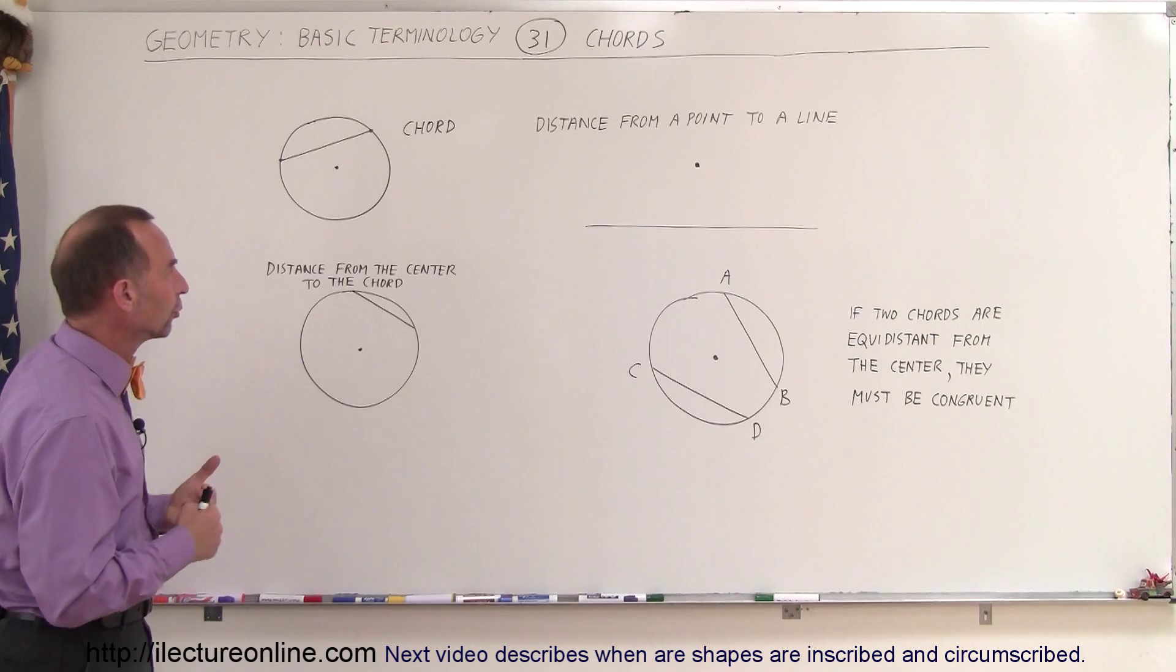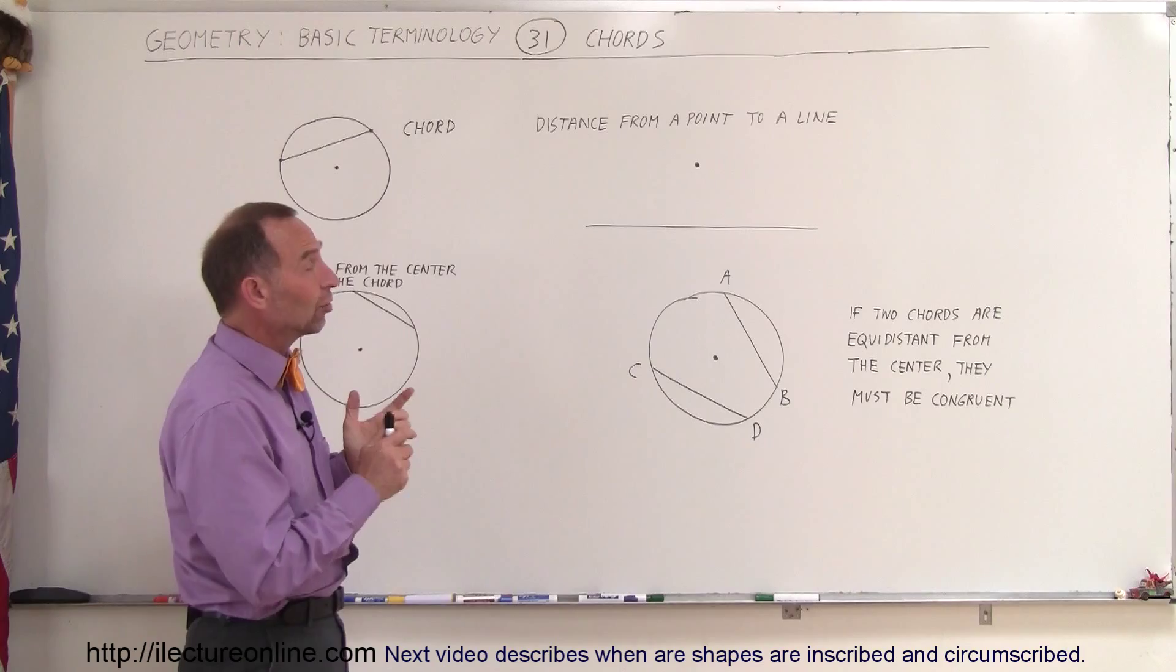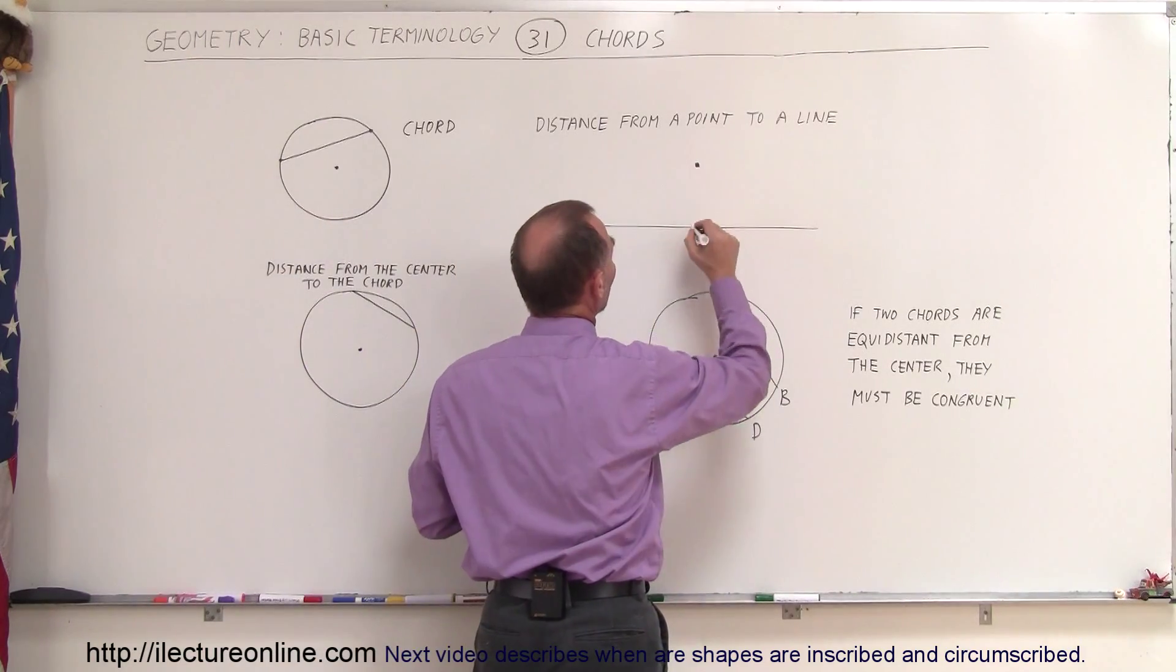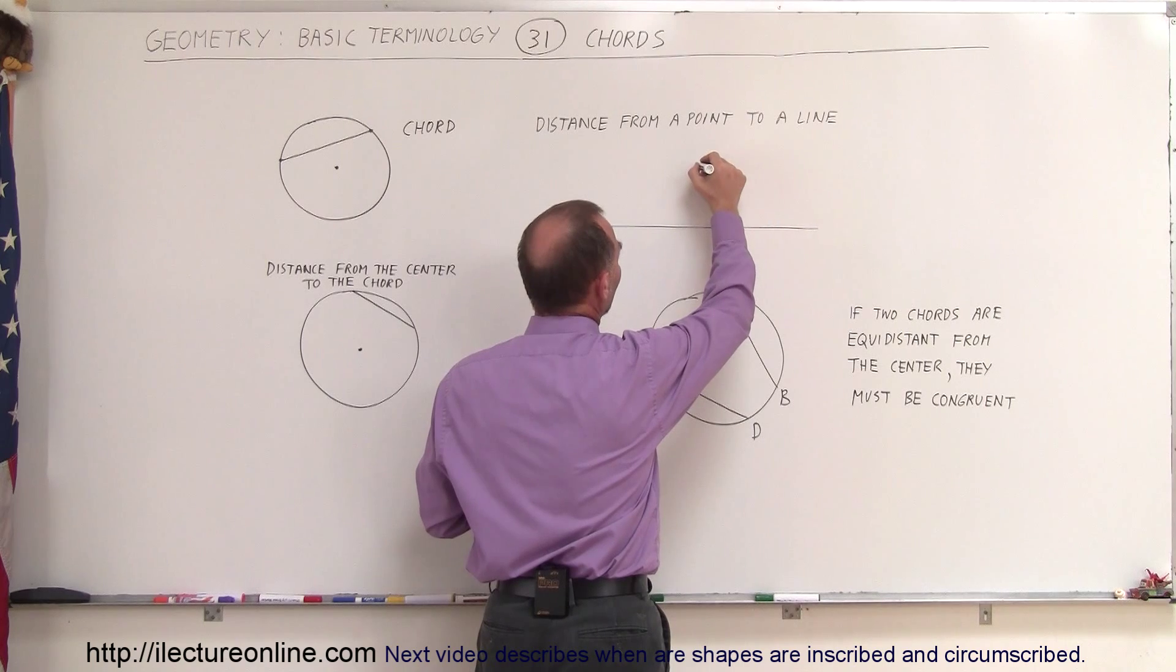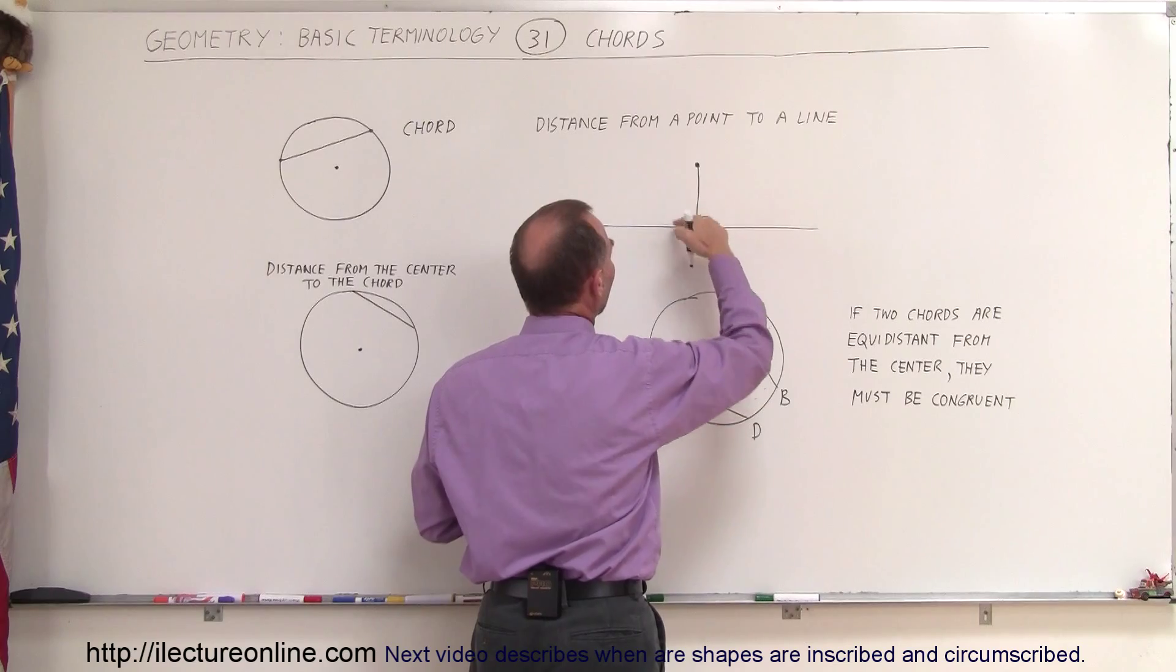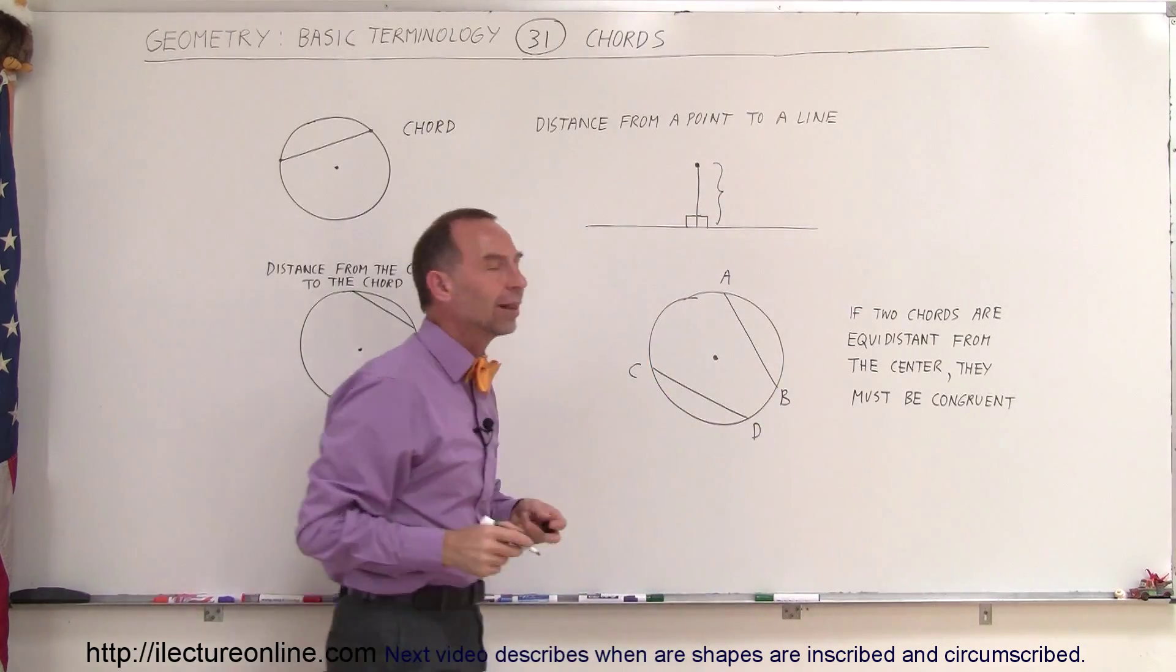It doesn't have to go to the center. Now, the distance from a point to a line is defined as the shortest distance from the point to the line, which means if you draw a line from the point to the line of interest, those two lines must reach one another perpendicular to one another. This is then determined to be the distance from the point to that line.